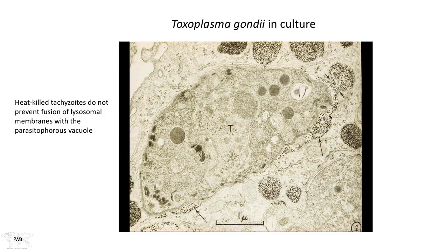How do we know that's true? If instead of living tachyzoites you heat-kill them first and then introduce them to the macrophages, not only do the macrophages take them up, but they are able to fuse their lysosomes with the parasitophorous vacuole. With a dead organism inside, the enzymes in the lysosome create an acidification event followed by the release of various proteases, DNAases, and other enzyme systems, resulting in complete dissolution of the organism. Living organisms prevent this process; dead organisms cannot.